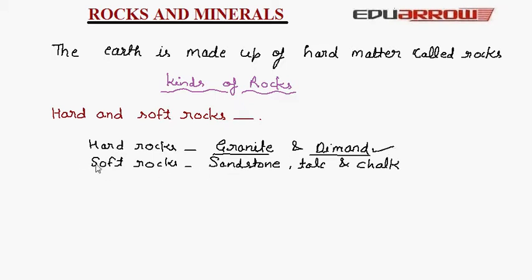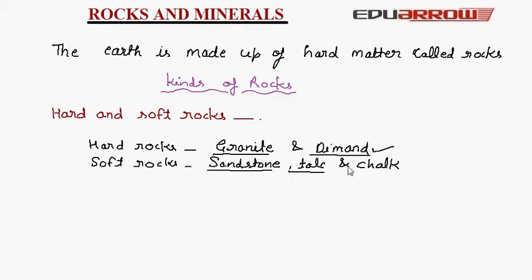Soft rocks include sandstone, talc, and chalk. Sandstone is red in color and it is used for making buildings. Talc is used to make talcum powder, and chalk is used for writing on the blackboard.